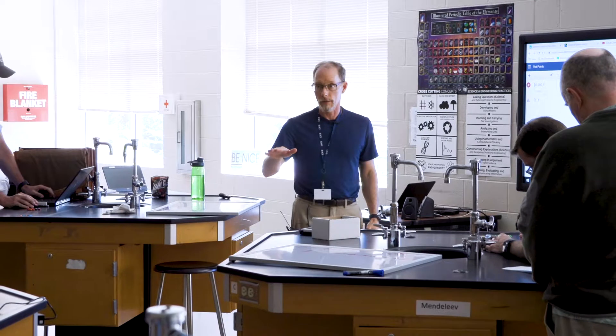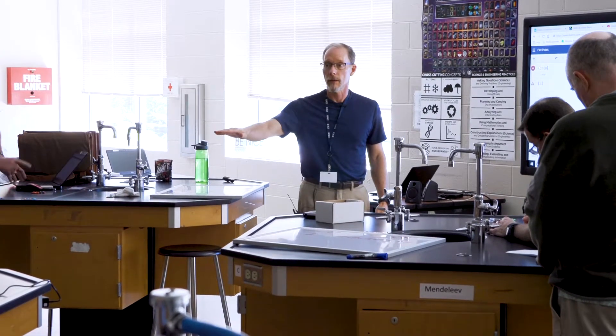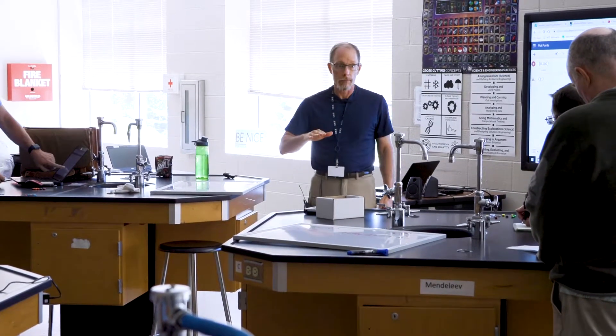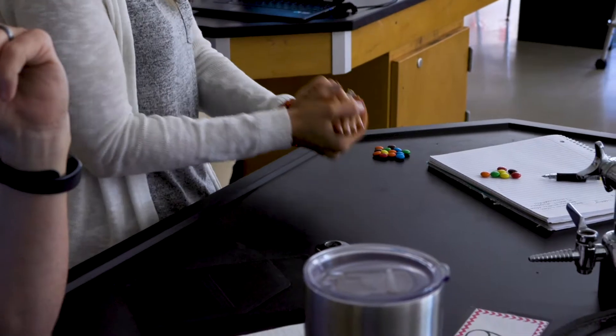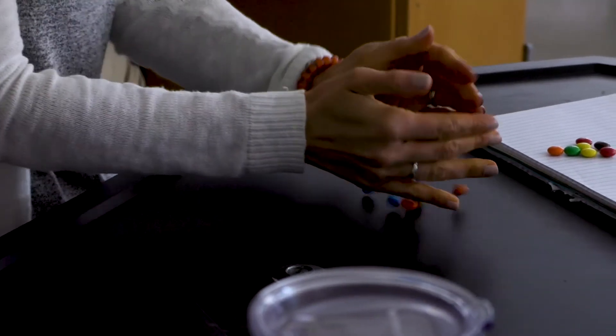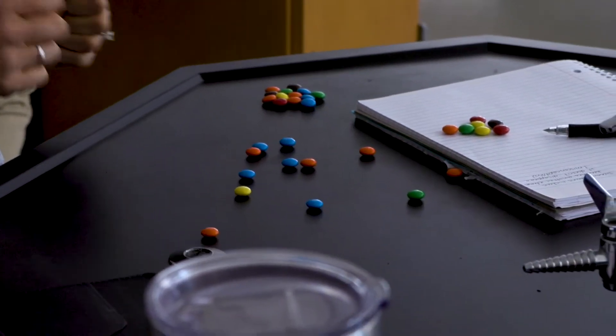So now what you do is, you've got the M side downs, right? Those have already decayed. So the ones that are M side up, take them, just the M side up ones. Take them, and we're going to go through one more decay. So roll them and count the M's that are left.